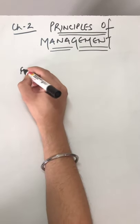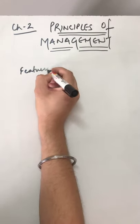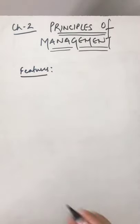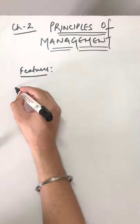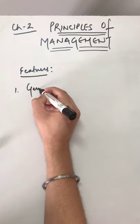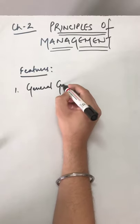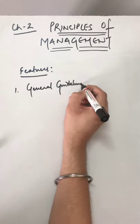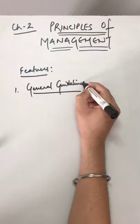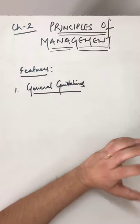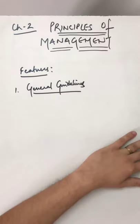So let us start with the features of principles of management, which will help us understand more about what they actually are. The first feature is that they are general guidelines for managerial action. These principles are not meant to give us straight-jacket solutions.